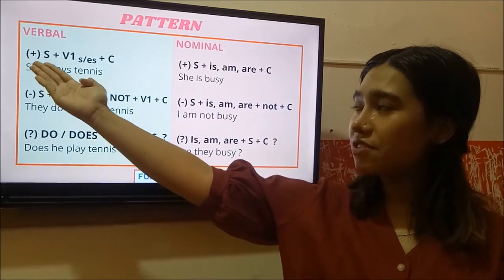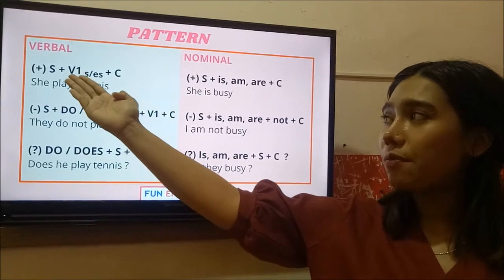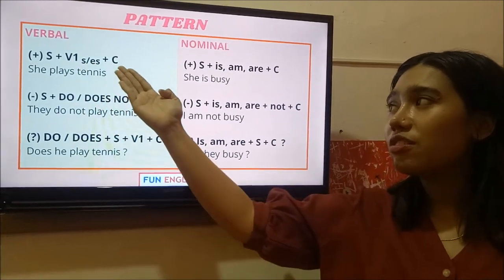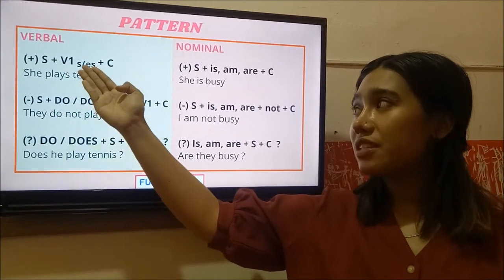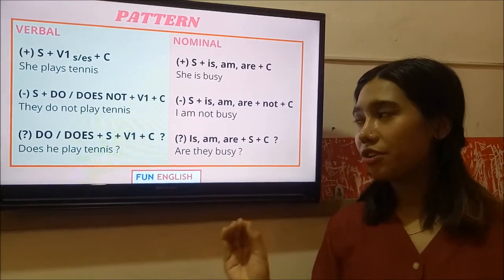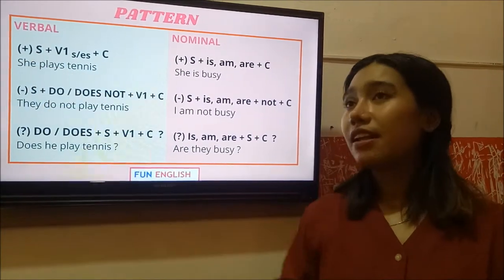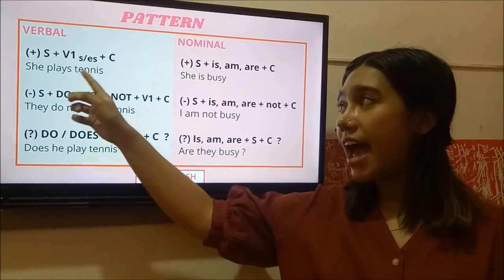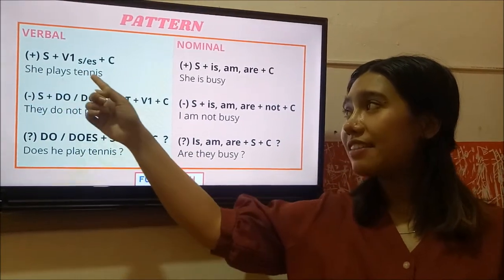Here is the positive sentence. You have to include subject, verb 1, then you have to put S or ES and also the object as complement. Okay, verb 1, S plus ES. You will remember, you have to remember that it depends on the subject. Right, she did it. You have to put the verb N, F, S, or ES. For example, she plays tennis.